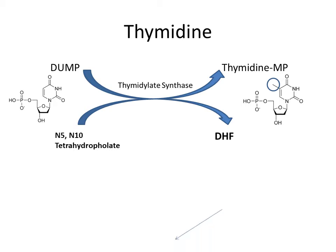In this process, N5,N10-tetrahydrofolate converts into dihydrofolate. That dihydrofolate converts back into tetrahydrofolate with the help of dihydrofolate reductase, and that tetrahydrofolate converts back into N5,N10-tetrahydrofolate. That's why we need a constant amount of N5,N10-tetrahydrofolate in our body to synthesize thymidine monophosphate. Some of the dihydrofolate comes from folate we consume from diet.